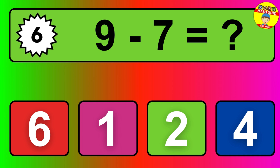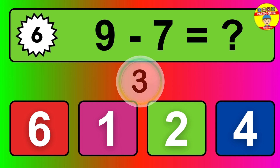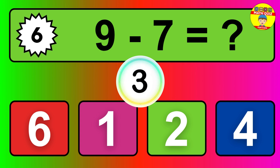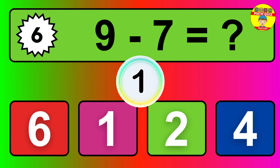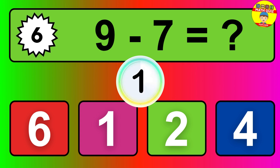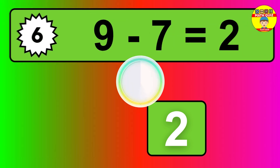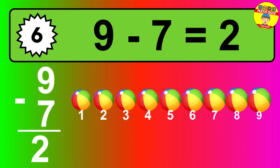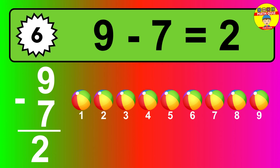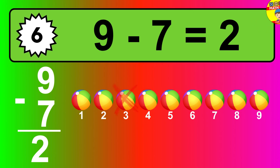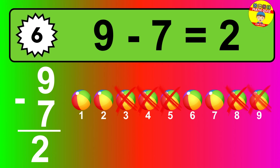Question 6. 9 minus 7 equals what? So the answer is 9 minus 7 is 2. Let's count it: 1, 2.